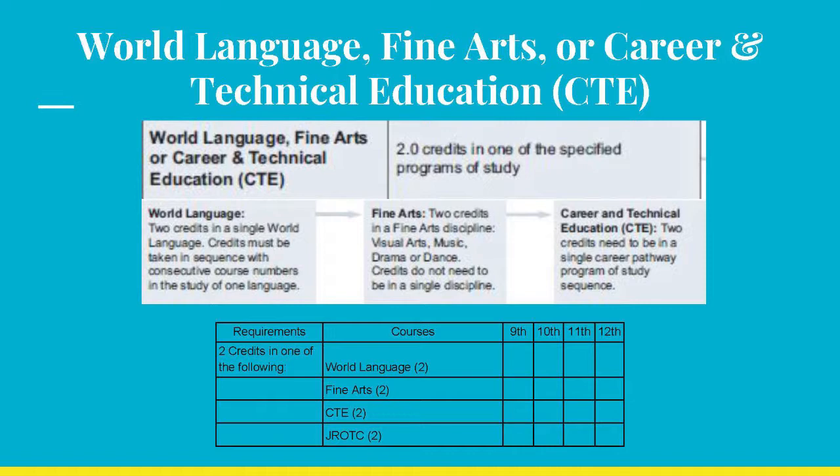In Fine Arts, two credits must be earned in the following disciplines: Visual Arts like Photography or Ceramics, Music like Band or Guitar, Drama, or Dance. Credits do not need to be in a single discipline. In CTE, two credits need to be in a single Career Pathway Program of Study Sequence, like Public and Human Service Pathway and Culinary 1.